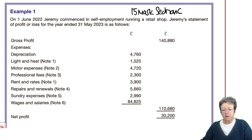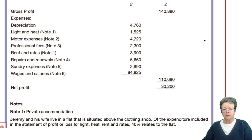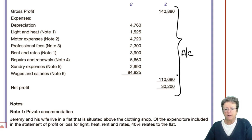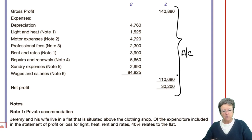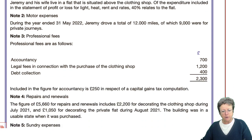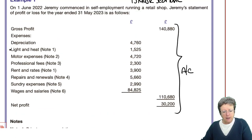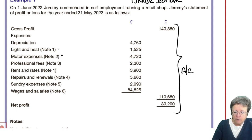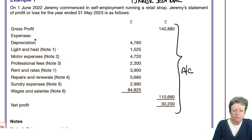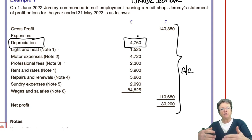This is typical in the sense that what they've done is actually given you a set of accounts — gross profit and some of the expenses. As you read down, you'll note that there are notes all the way down, with little headings: private accommodation, motor expenses, professional fees, repairs and renewals, etc. They are highlighted here as notes 1, 2, 3, and so on. What is rarely in those notes is this one — don't forget it, and that's the one you should put in your answer first.